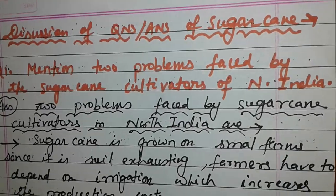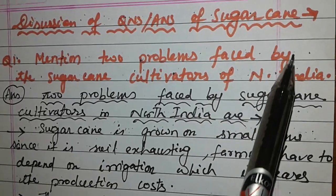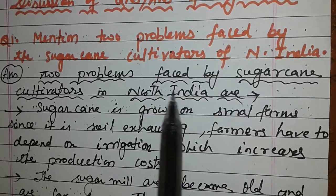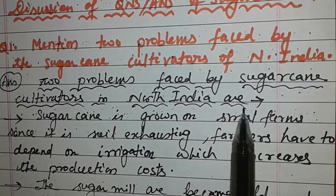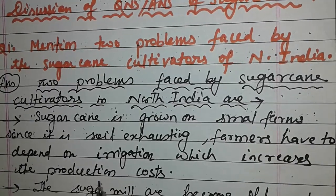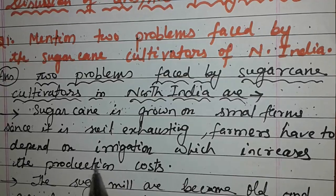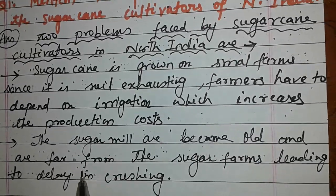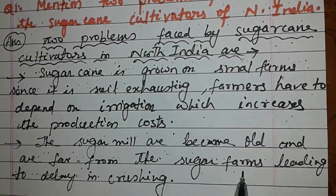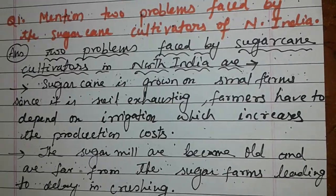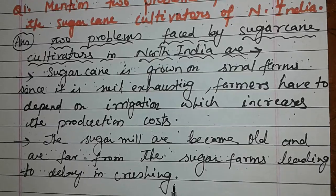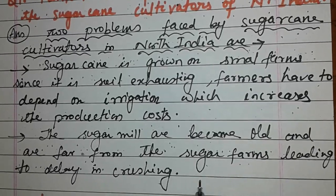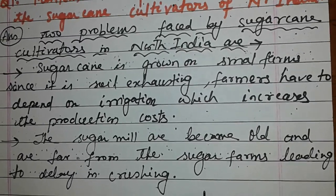Question: Mention two problems faced by the sugarcane cultivators of North India. Answer: Sugarcane is grown on small farms and since it is soil-exhausting, farmers have to depend on irrigation which increases production cost. Sugar mills are becoming old and are far from the sugarcane farms, leading to delay in crushing. If the sugarcane is delayed beyond 24 to 48 hours before reaching the mill, the sugar content decreases.